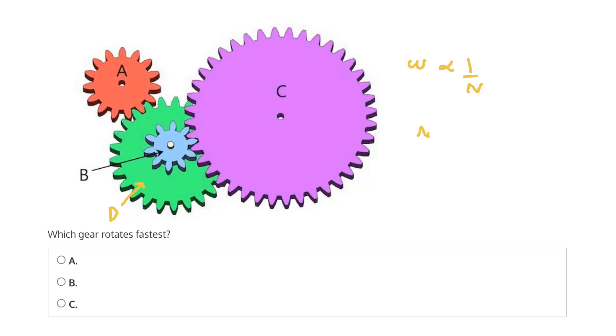So again, because the number of teeth of gear B is less than that of C, we can say that the rotational speed of B is greater than that of C.